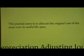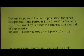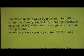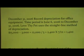This journal entry is to allocate the original cost of the asset over its useful life. The calculation is the fifteen thousand minus the three thousand residual value, also referred to as salvage value, which equals a depreciable cost of twelve thousand dollars divided over its useful life of five years, giving you two thousand four hundred in annual depreciation.